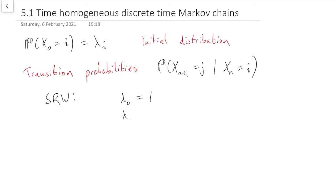and lambda i equals 0, i not equal to 0, meaning we start from state 0 with probability 1, and we start from anywhere else with probability 0.